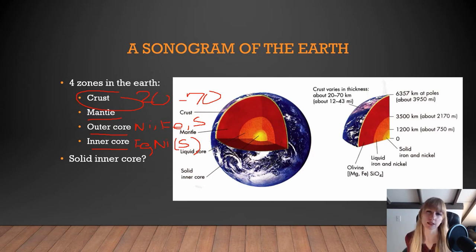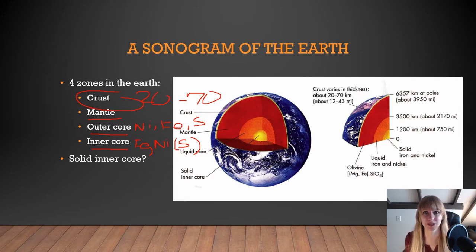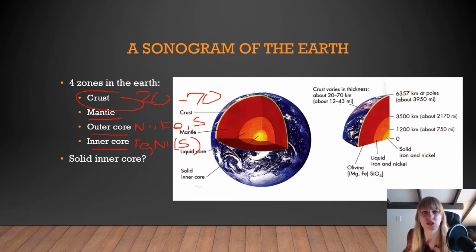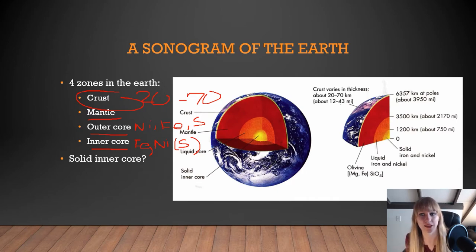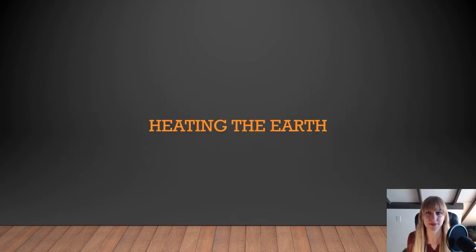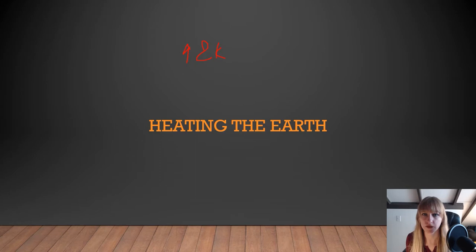Why is the inner core solid but the outer core liquid? The center of the Earth is at very high temperatures — high enough that most rock would be melted. But it is under such extreme pressure due to all the weight on top of it that the compression pushes atoms together, making it actually a solid rather than a liquid. As you go deeper into the Earth, the temperature rises about two Kelvin every 100 meters.